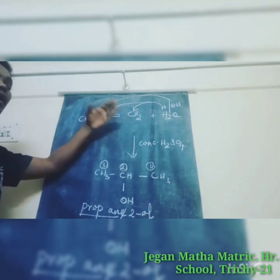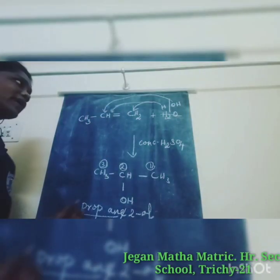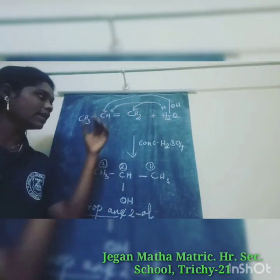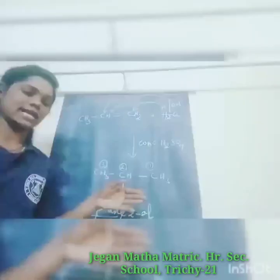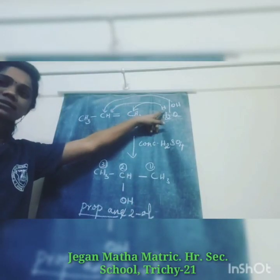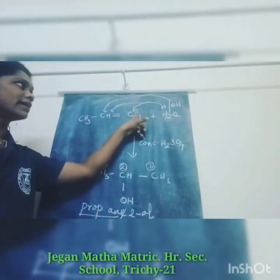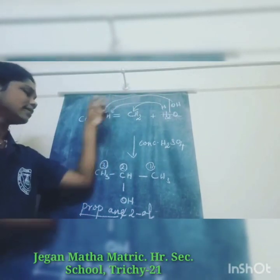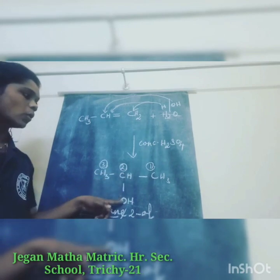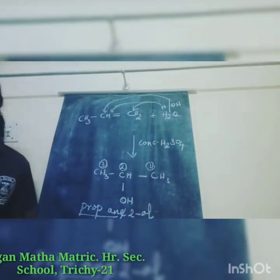Summary of first preparation: we take propene (propylene is the common name, propene is the IUPAC name), add H2O in the presence of concentrated sulfuric acid. Water ionizes as H and OH; H combines at C1 and OH at C2, giving CH3–CHOH–CH3, which is propan-2-ol.